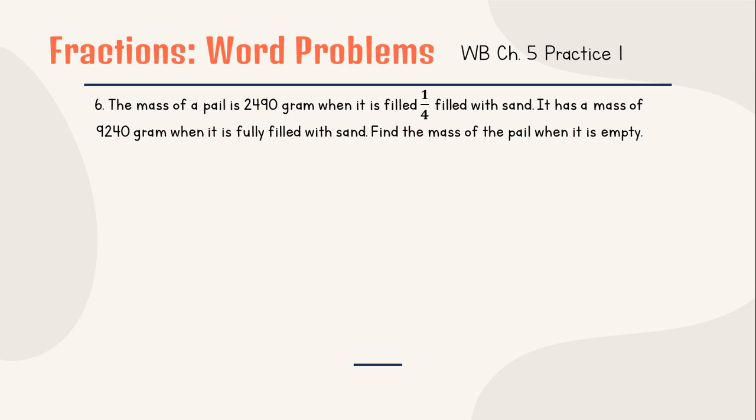Do you know what a pail is? It looks like a bucket, right? So it means that pail has its own mass. The pail has its own mass - that bucket already has weight. So 2,490 is not only 1/4 filled with sand, but the pail plus 1/4 sand.